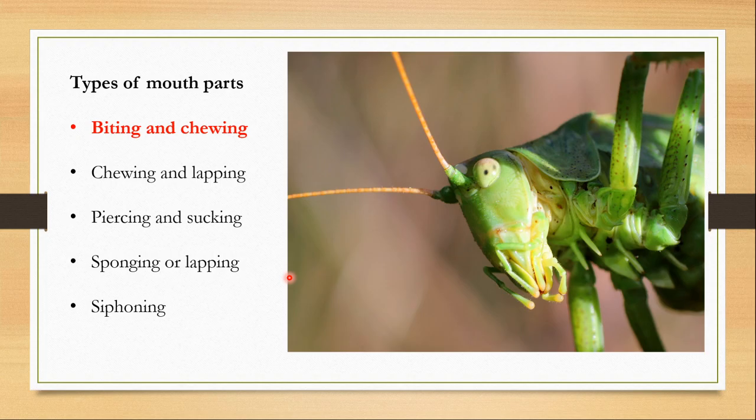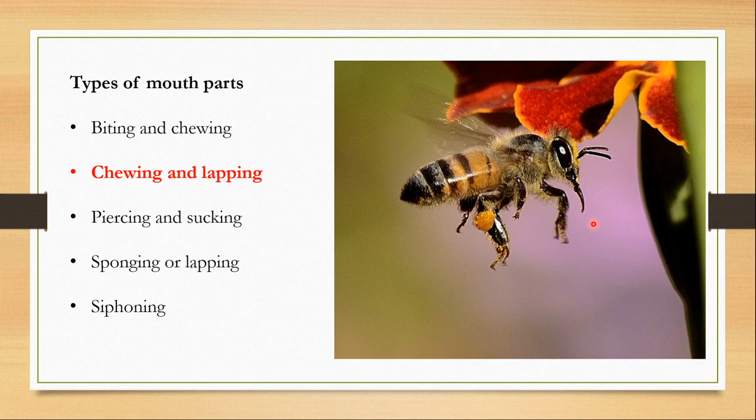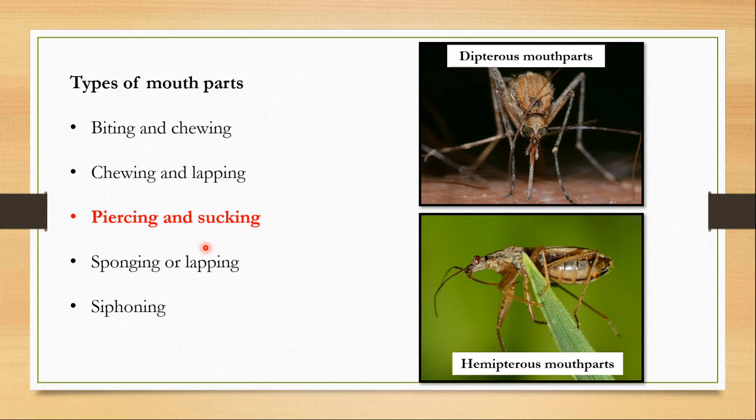The first type is the biting and chewing mouthparts, which are found in grasshoppers, cockroaches, mantids, silverfish, etc. Then I will talk about the chewing and lapping mouthparts of worker bees, and then the piercing and sucking mouthparts found in dipteran insects, known as the dipterus type, and also in hemipteran insects, known as the hemipterus type.